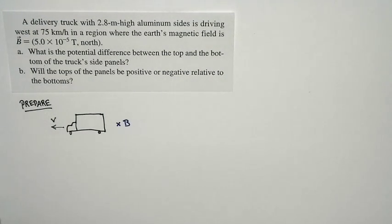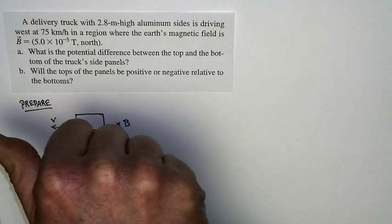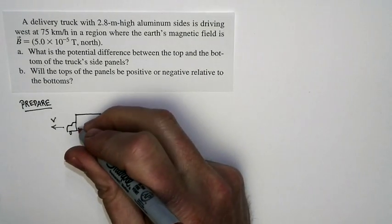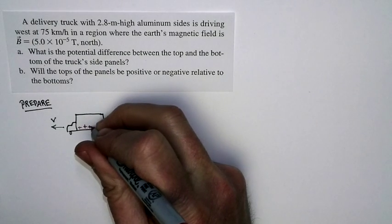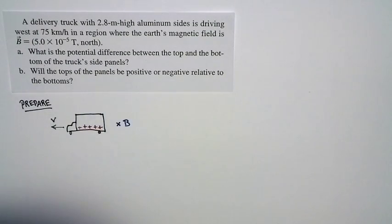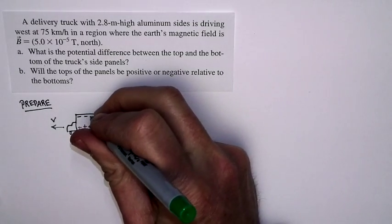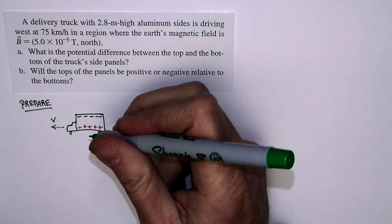Now think about the force on charges. Velocity is this way. Magnetic field is into the paper. And so the force is directed towards the bottom of the paper on a positively charged particle. So what's going to happen is the positive charge particles are going to end up on the bottom of the truck. Negative charges will feel a force in the opposite direction, and so they're going to pile up on the top of the truck.